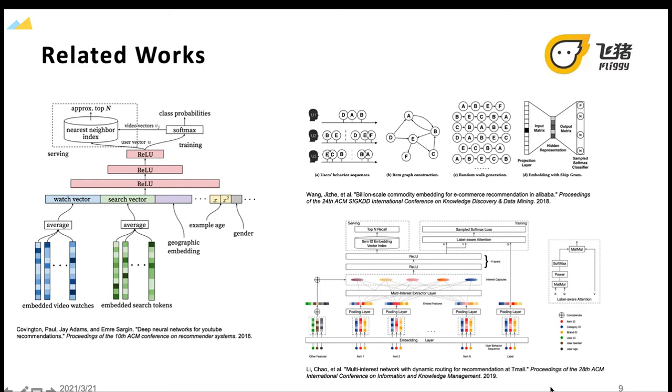In YouTube DNN, items and users are mapped to vectors via embedding layers and feed-forward neural network. At serving time, YouTube DNN computes most likely K videos and presents them to the user. To alleviate the sparsity and cold-start problems, side information is incorporated into the graph embedding framework.